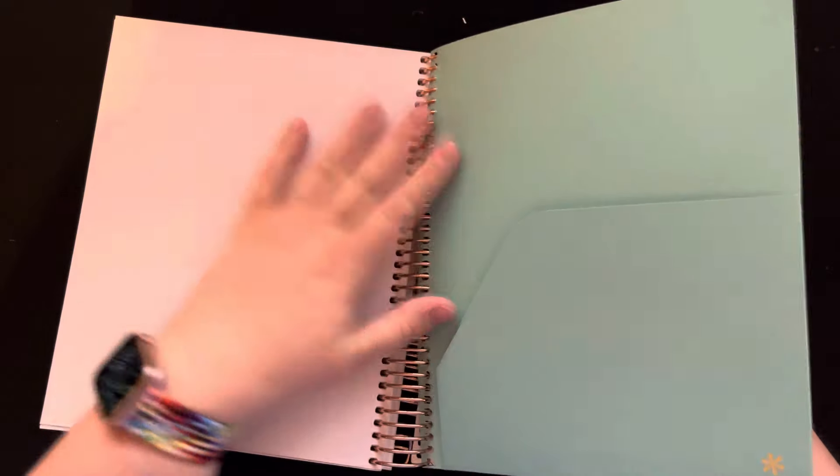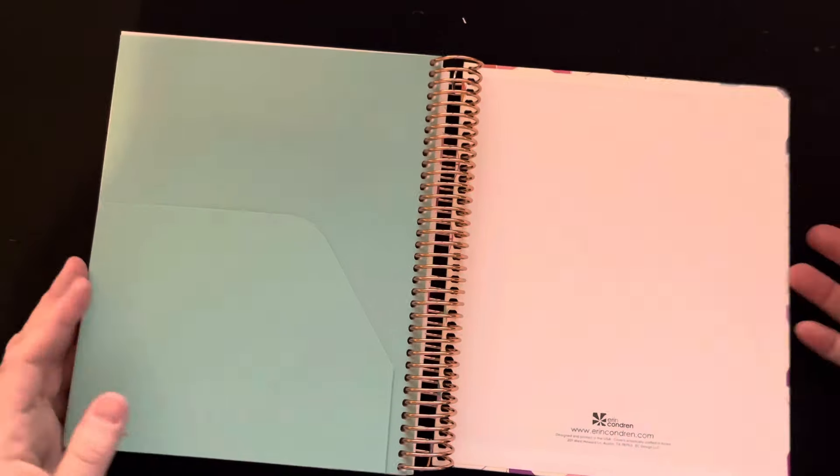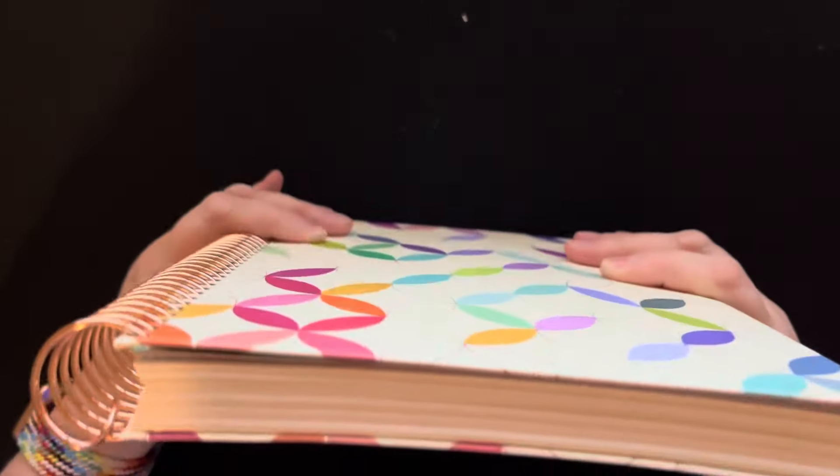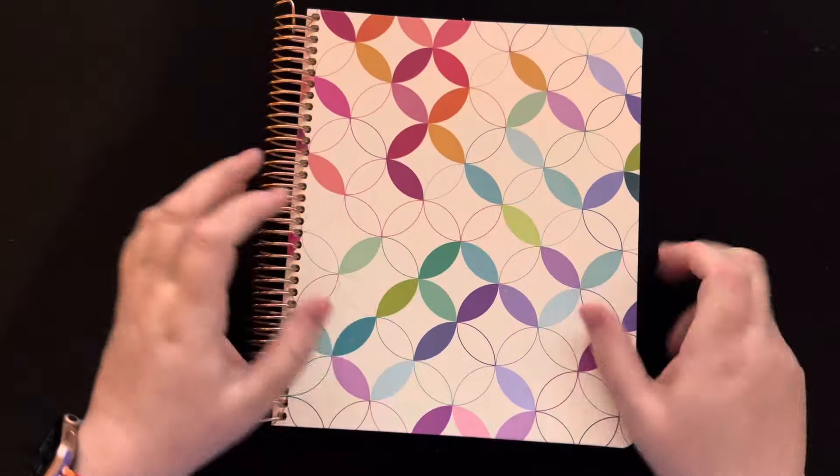Not once have I ever used a double-sided folder from Erin Condren, but I love them. And then obviously the vegan leather cover at the back. It's pretty. I really like it. It's thinner than a life planner. So if you want something thinner than that, this would be a good choice.